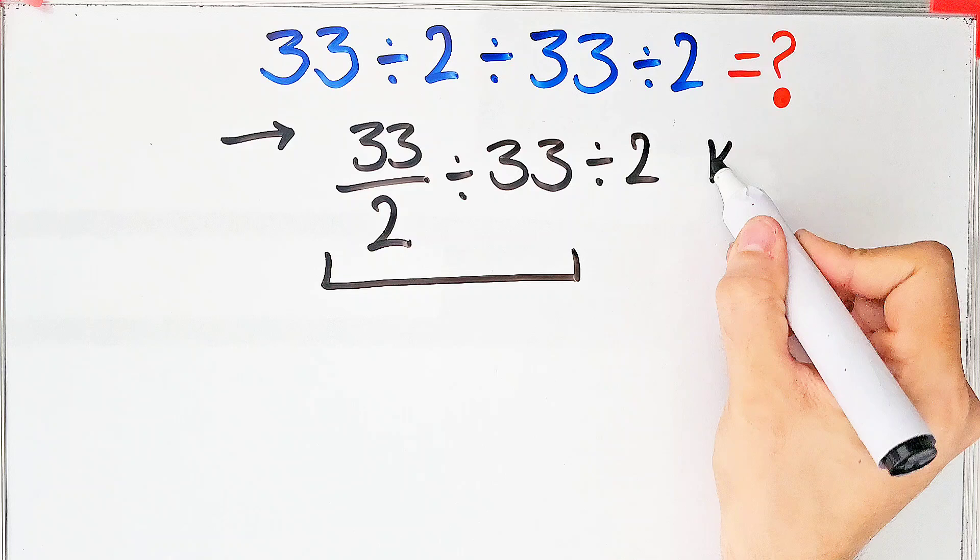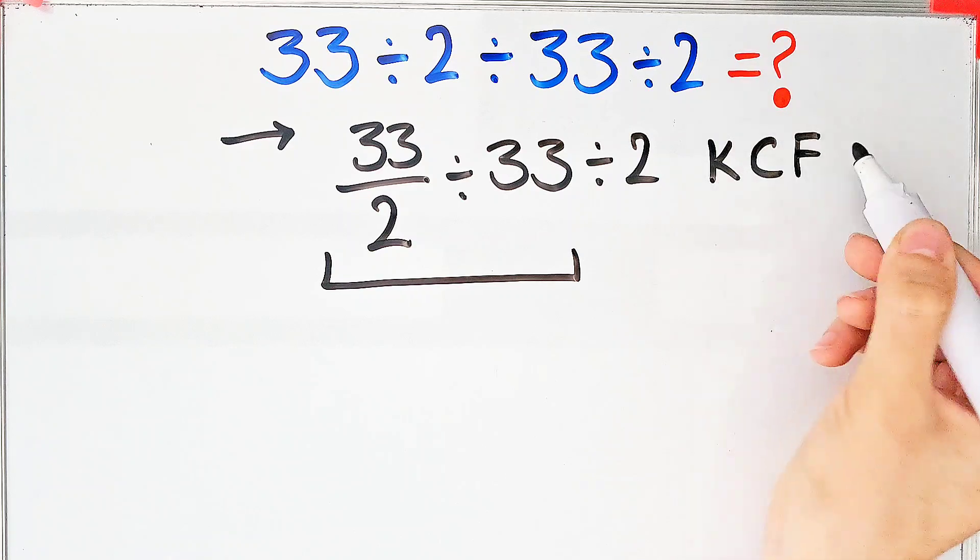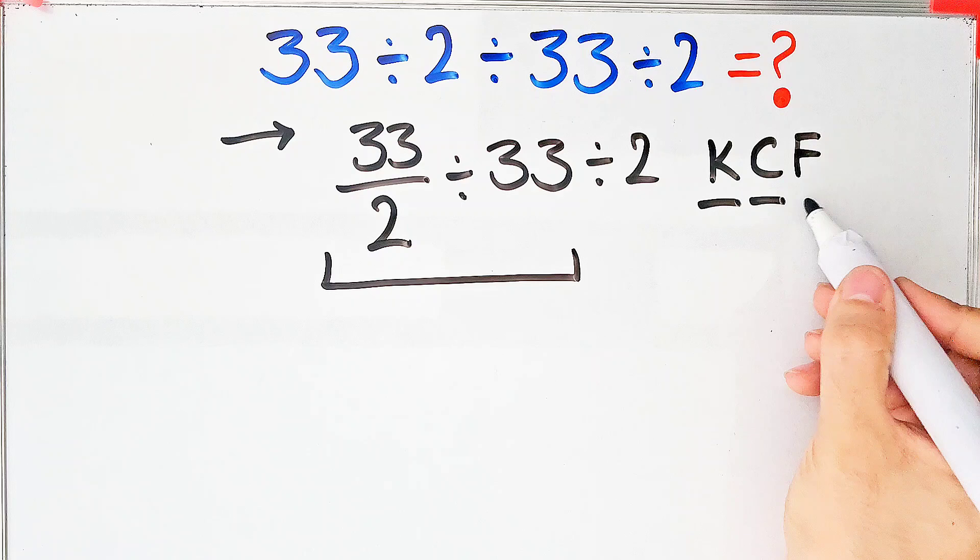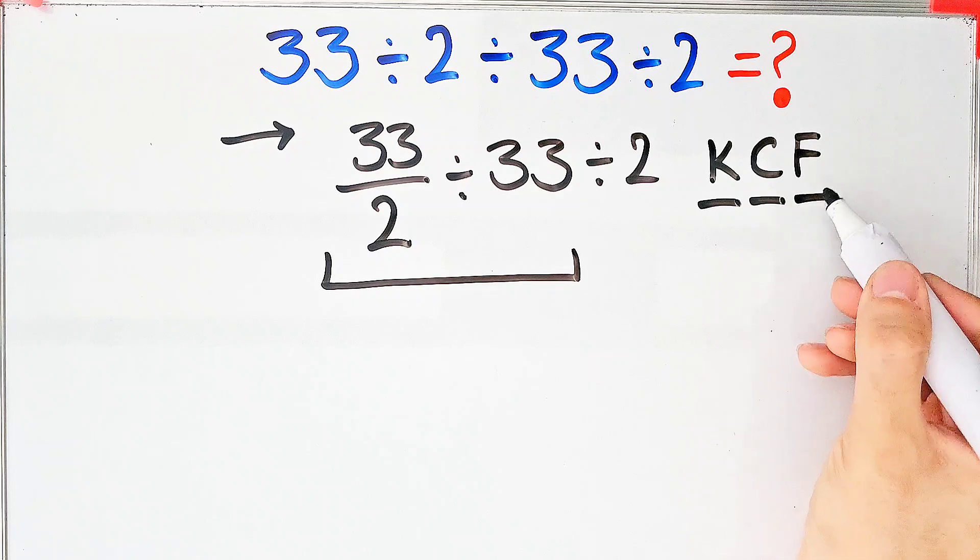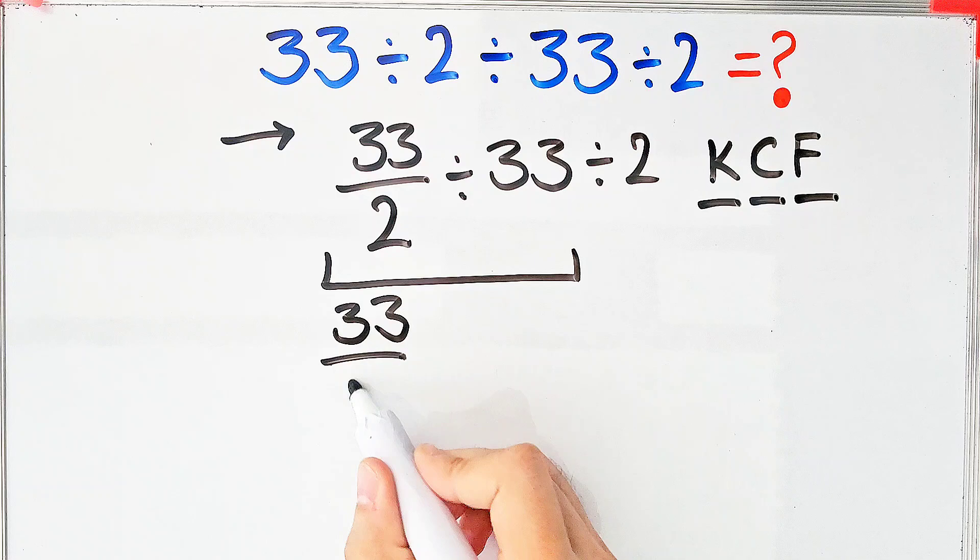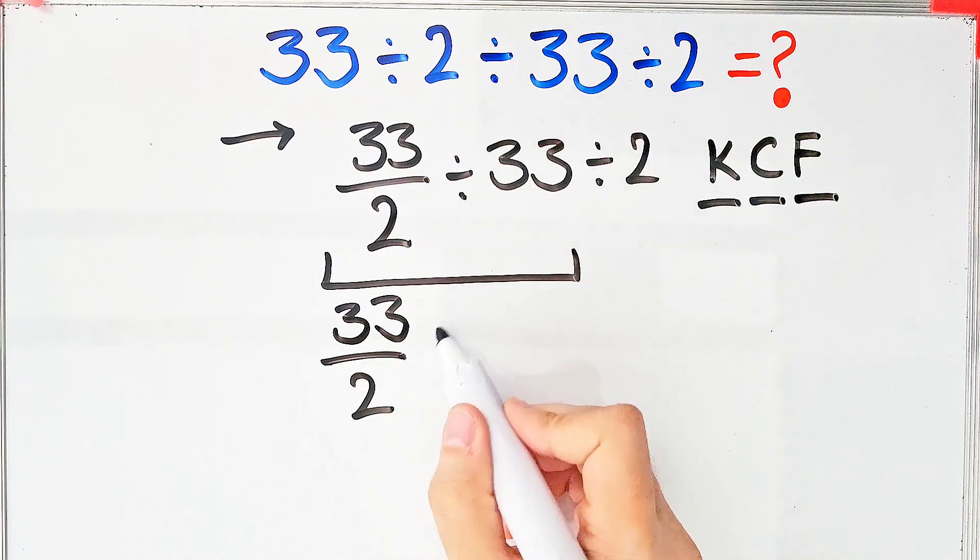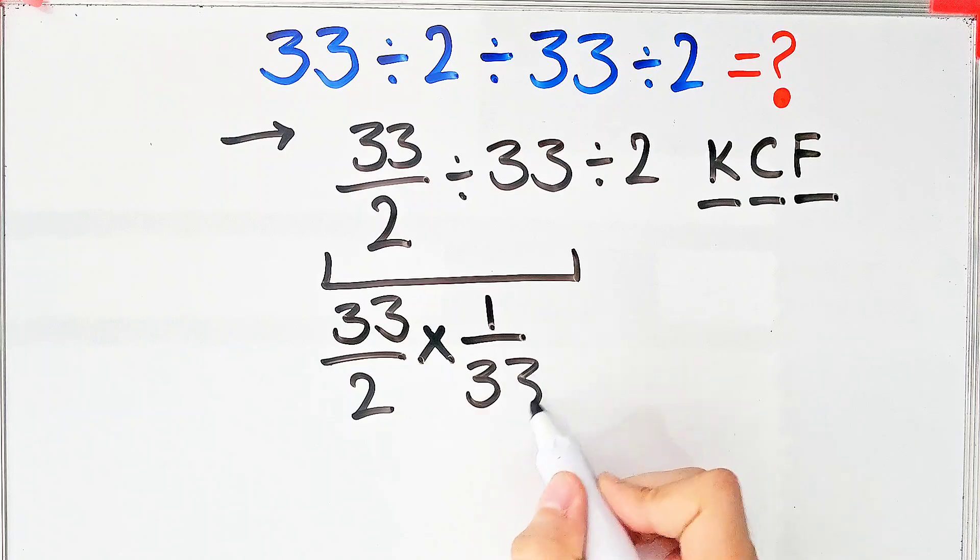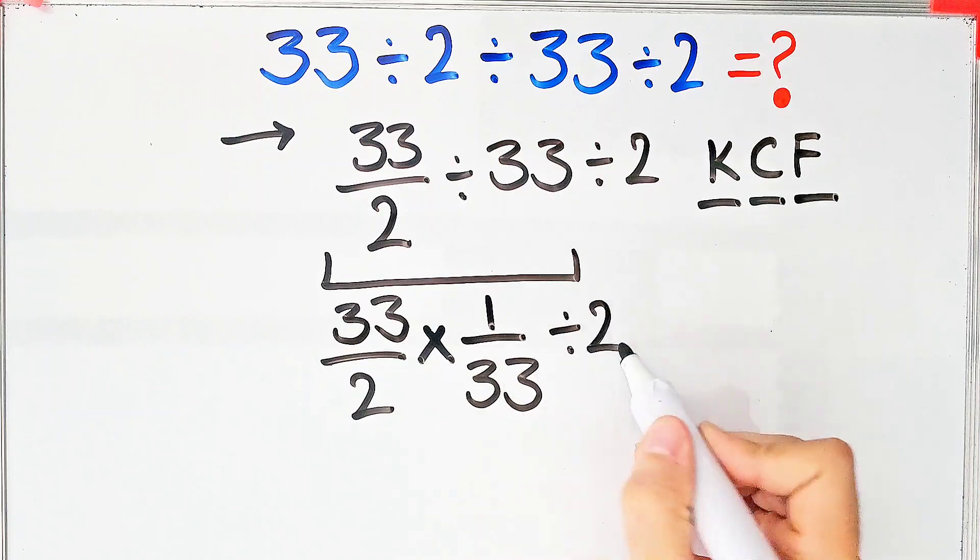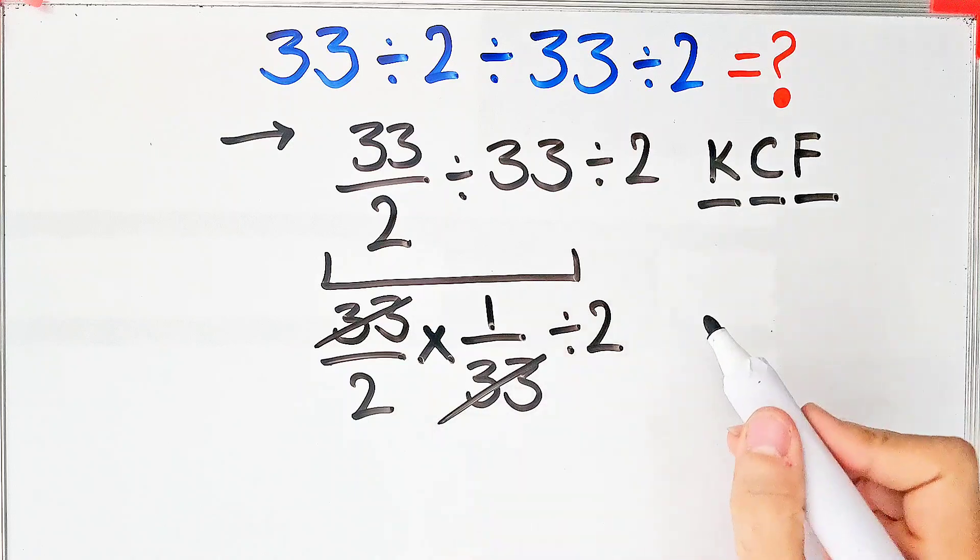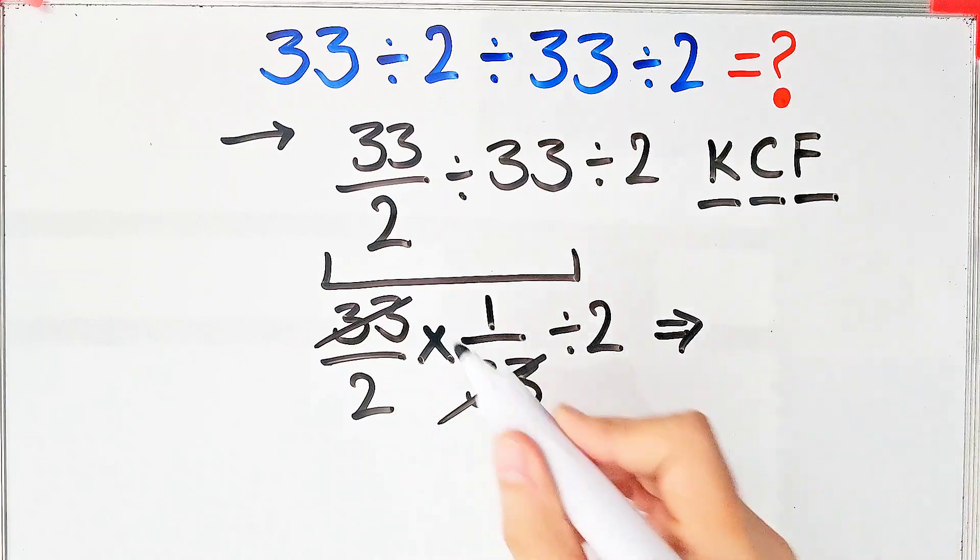we need to follow the KCF rule. In this rule, K stands for keep, C stands for change, and F stands for flip. We keep the first fraction as it is. After that, we change the division sign to the multiplication sign. And after that, we flip the second number. Now we have a new expression. We simplify the first part and now we have 1 over 2 divided by 2.